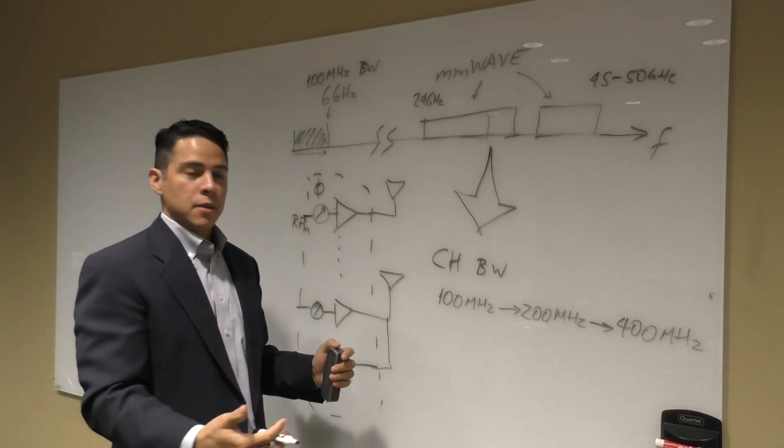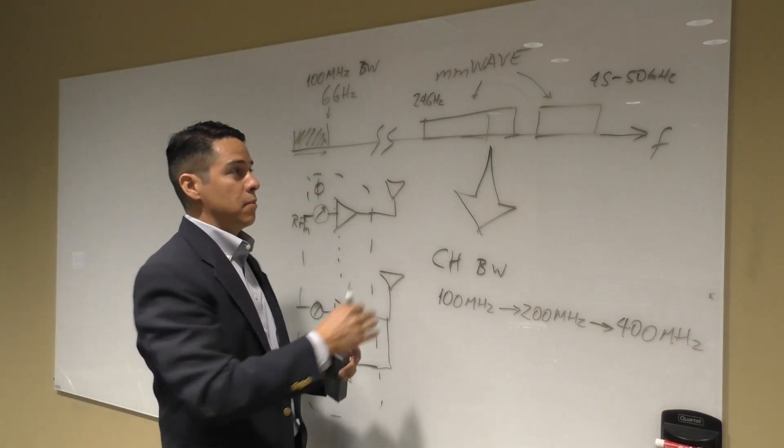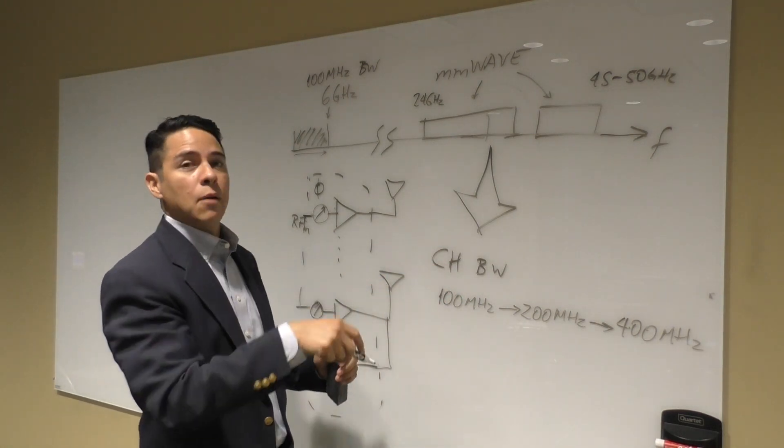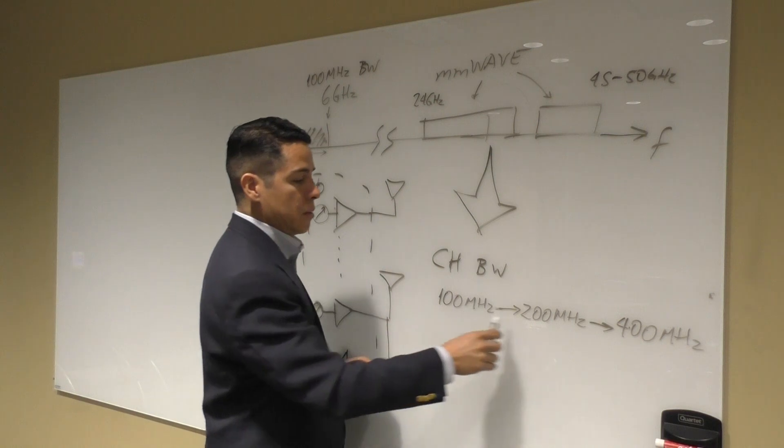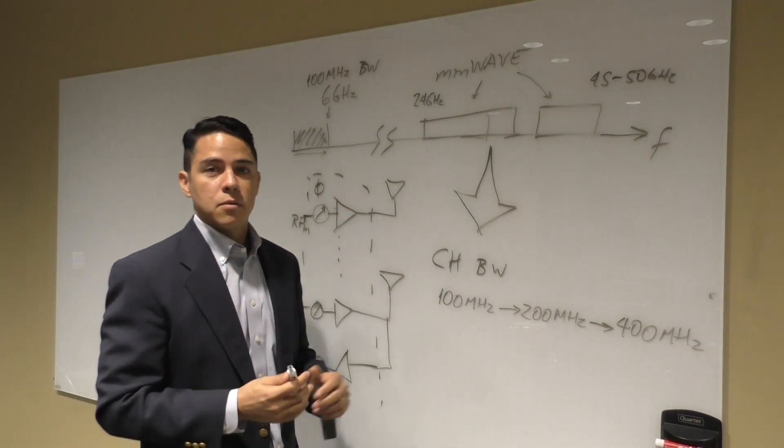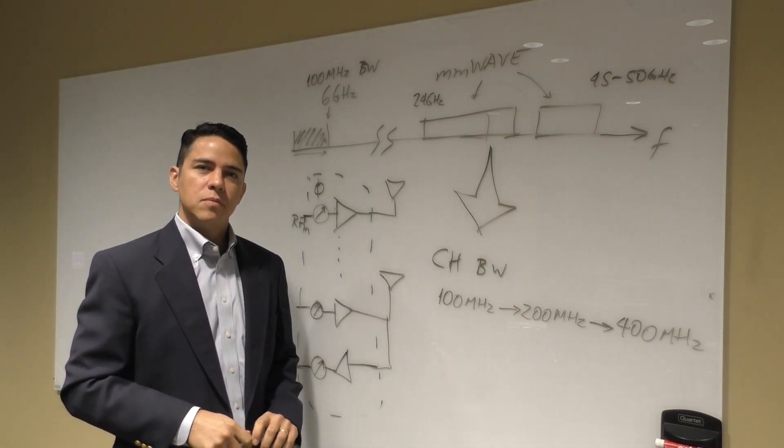But that's just the channel bandwidth. When we start aggregating these carriers, we could have bandwidths that are much larger. We can be in excess of a gigahertz of bandwidth, especially when we're looking at downlink signals. We could have multiple carriers that have been aggregated, and then the downlink bandwidth is quite significant.